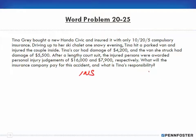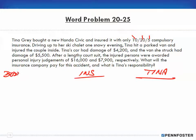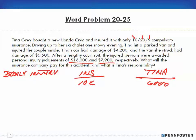Let me present this more clearly. We have the insurance company here and Tina over here. Tina has liability insurance: $10,000, $20,000, and $5,000. $10,000 is on the first person, $20,000 is on all other passengers, and $5,000 is for property damage. For bodily injury — the first person was awarded $16,000. The insurance company only pays $10,000 of that; Tina pays the additional $6,000. For the second person, awarded $7,900 — the insurance company pays the full amount since it's within the additional $10,000 coverage. Tina pays nothing for the second person.